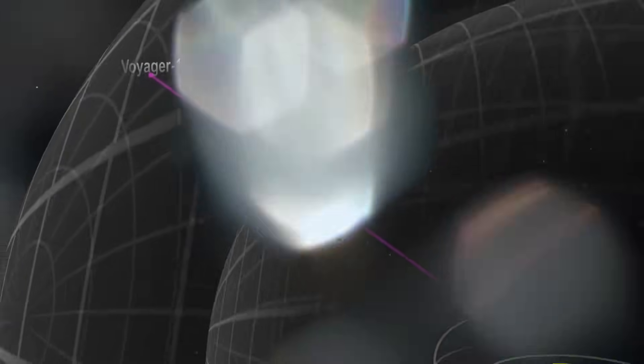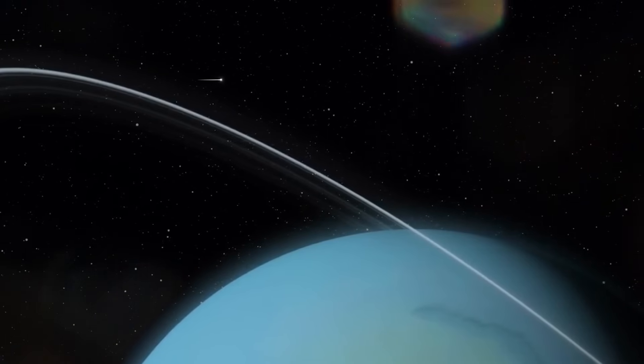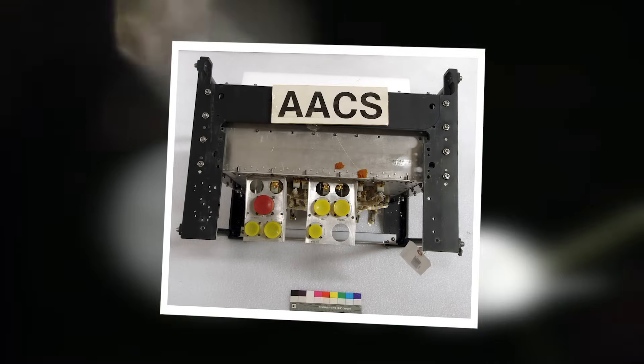In May of last year, scientists at NASA's Jet Propulsion Laboratory noticed something strange. The Attitude Articulation and Control System, or AACS, which keeps Voyager's antenna pointed precisely at Earth, began sending scrambled data.